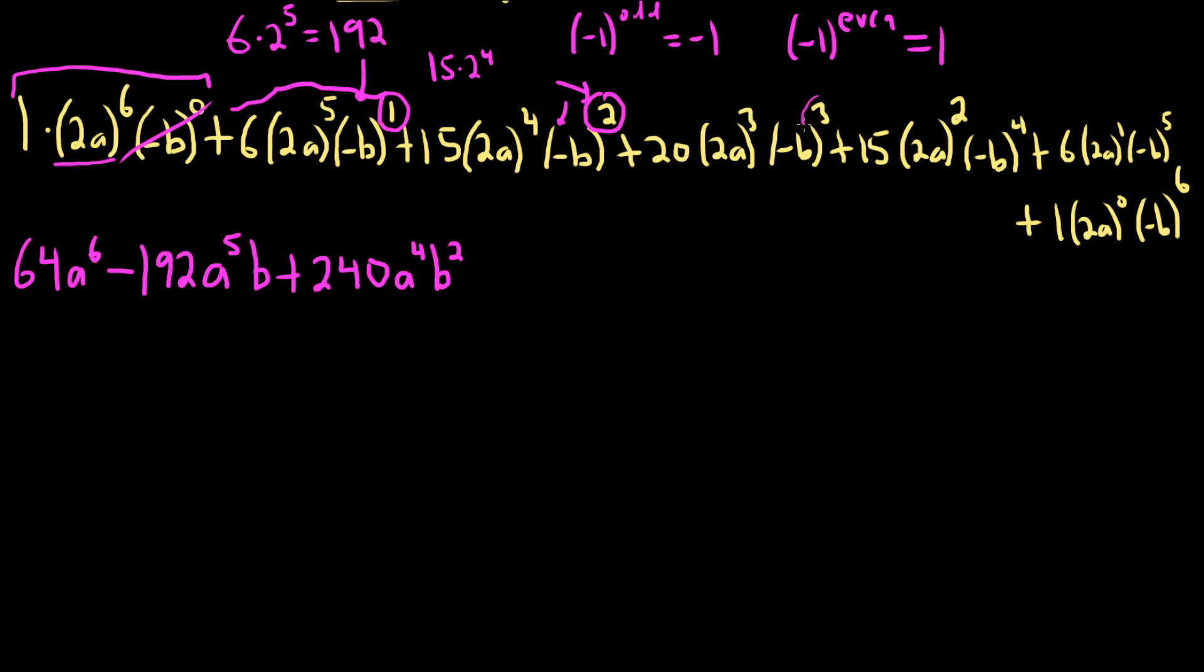Let's go to the next one. Getting ridiculous. Oh, look. It's odd. So it'll be minus. Minus 20. And then 2 cubed. That's 20 times 8, which should be 160. It is. So minus 160. A cubed. B cubed. Beautiful stuff.